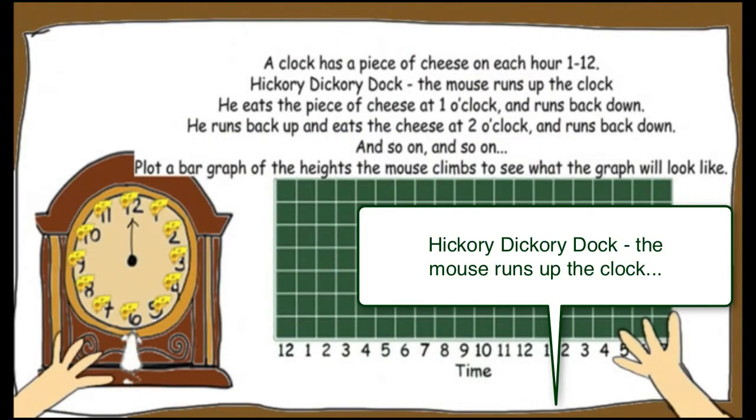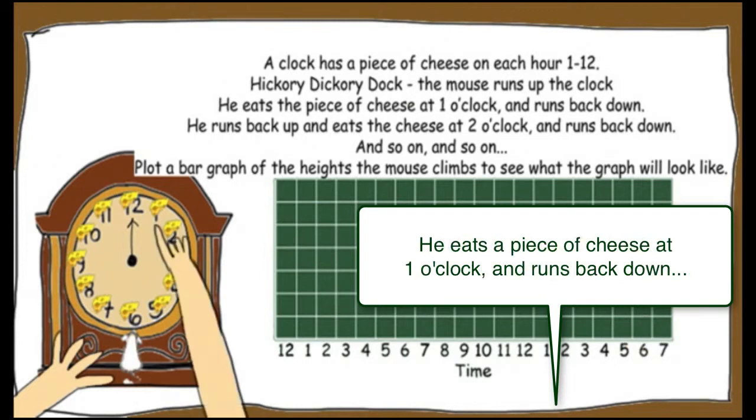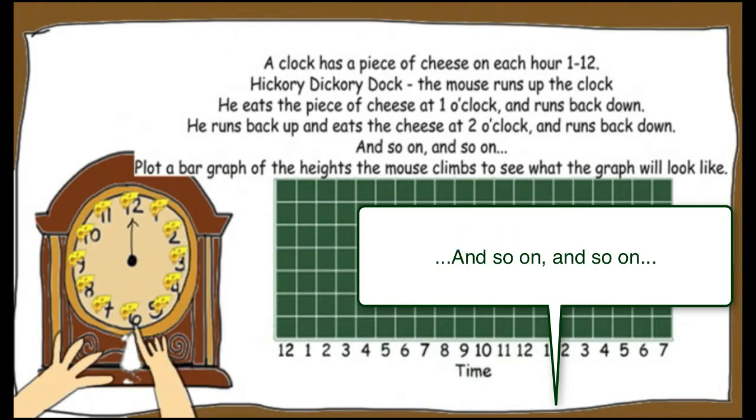Look. Hickory dickory dock. The mouse climbs up the clock. He eats a piece of cheese at 1 o'clock and runs back down. He climbs back up and eats the cheese at 2 o'clock, and so on and on.